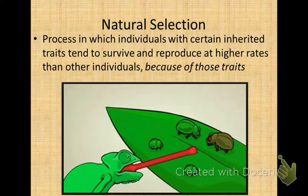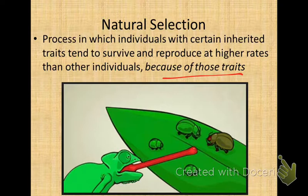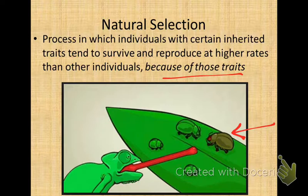Natural selection is a process in which individuals with certain inherited traits tend to survive and reproduce at higher rates than other individuals because of those traits. There are different levels of success in reproduction and survival based on their ability to survive in a particular environment. Nature filters out what would be considered weak traits. For example, dark beetles don't blend in as well with leaves, so their coloration would be a weak trait because they would be more likely to be consumed by predators than green ones.